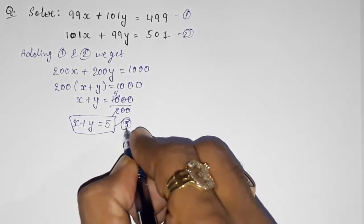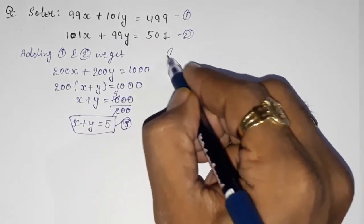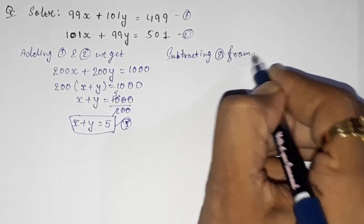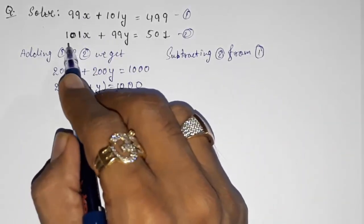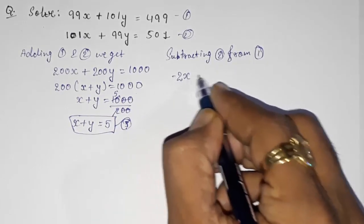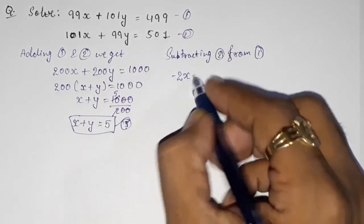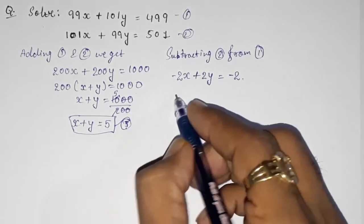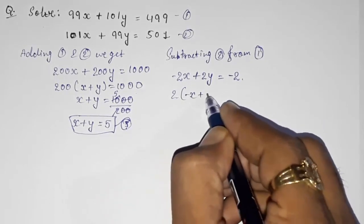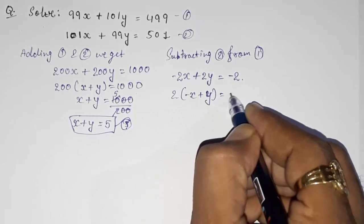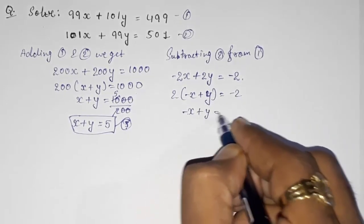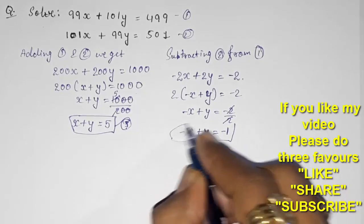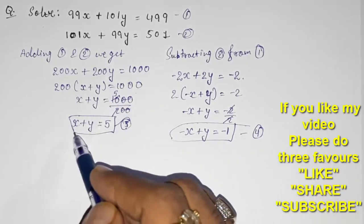Now subtracting equation two from equation one: 99x − 101x gives −2x, and 101y − 99y gives +2y, equals 499 − 501 = −2. Take 2 common: −x + y = −1. Take this as equation four.